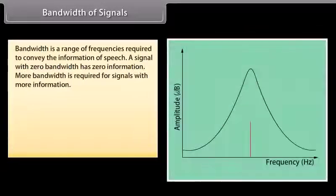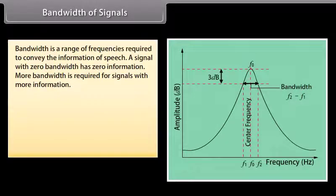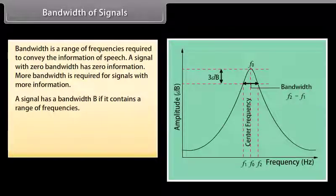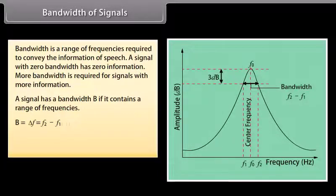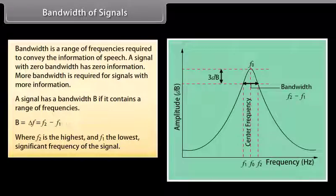Bandwidth of signals. Bandwidth is the range of frequencies required to convey the information of speech. A signal with zero bandwidth has zero information. More bandwidth is required for signals with more information. A signal has a bandwidth B if it contains a range of frequencies, where B = ΔF = F2 − F1.